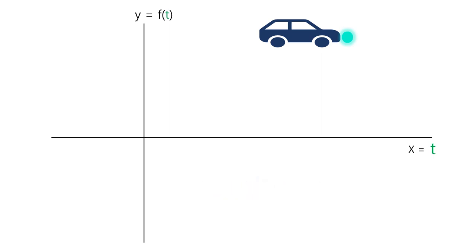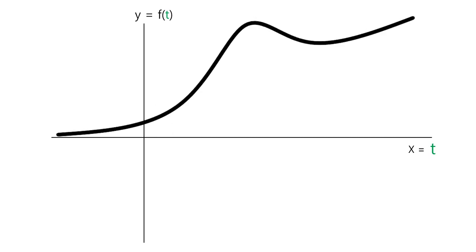That's because the position of thing changes with time. At this time, the function has this value, right? If we check each position with time by looking at the moving thing exactly, we can connect these dots in one line. It is graph of function, which is function of position with time.